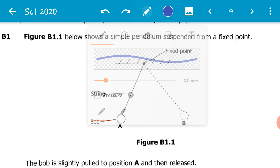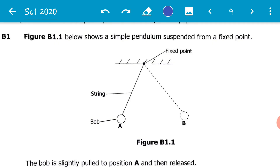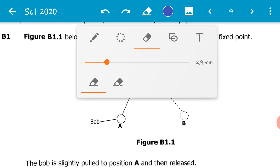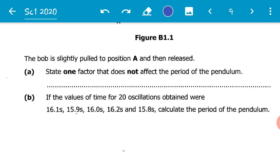If we analyze our pendulum, we find that we've got the string, we've got the bulb, and it is initially at point A. We also have a view of the pendulum at point B. The string is attached to a fixed support at that fixed point. The bulb is slightly pulled to position A and then released.